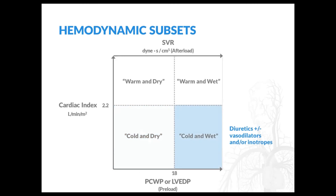Finally, in subset four — cold and wet patients — therapy consists of a combination of diuretics, vasodilators, or inotropes, with adjustments based on improvements in their clinical signs and symptoms of both congestion and low cardiac output. No matter the patient's hemodynamic subset at presentation, the goal is to optimize volume status and relieve the signs and symptoms of acute heart failure so that the patient may be discharged on a stable oral regimen.